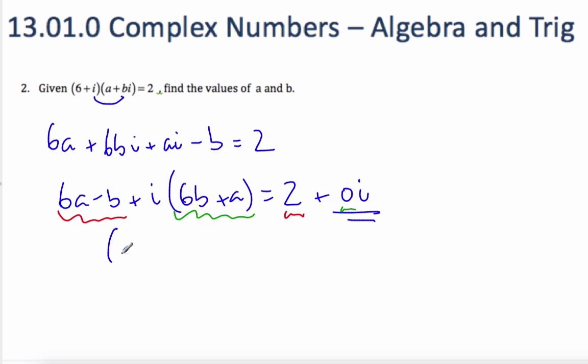And so 6a minus b is 2, and I can say that 6b plus a equals 0. So a is equal to minus 6b.